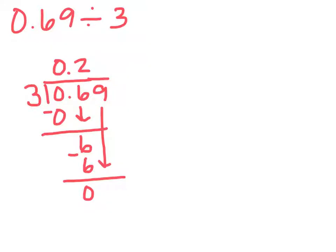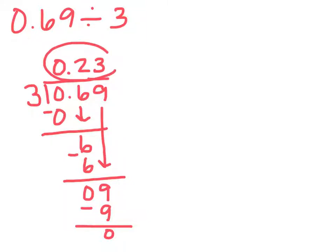6 minus 6 is 0. Bring down our 9. Now we'll divide the hundredths by 3: 3 goes into 9 three times. 3 times 3 equals 9, leaving us with no remainder. So our answer is 0.23. 69 hundredths divided by 3 is 23 hundredths.